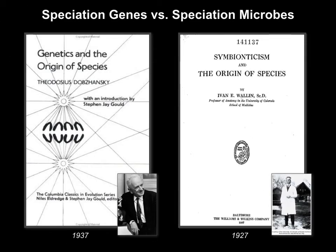In 1937, Theodosius Dobzhansky publishes one of the most well-known books in evolutionary biology, Genetics and the Origin of Species. Notably, Dobzhansky swapped out 'symbionticism' and put in 'genetics,' ending up with essentially the same title as Wallen's book, ten years apart. Wallen's book sort of gets lost in history; Dobzhansky's certainly does not.